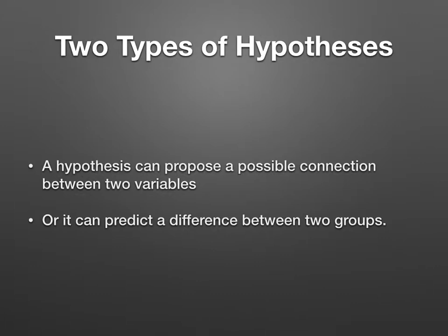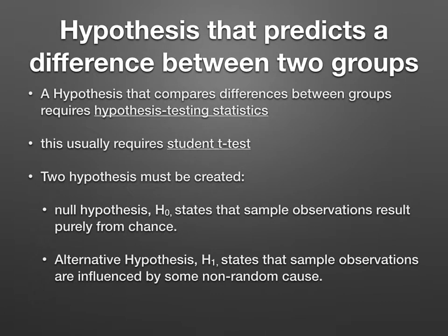Let's talk about hypotheses that predict the difference between two groups. A hypothesis that compares the difference between two groups requires hypothesis testing statistics. This usually requires a student t-test for small samples, and for large samples, a z-test. When you have this kind of hypothesis, you have to have two of them.